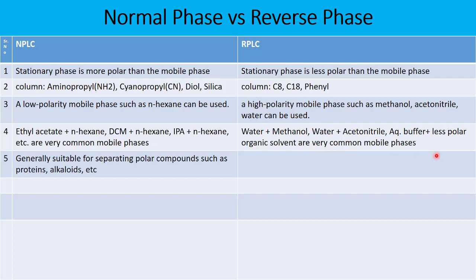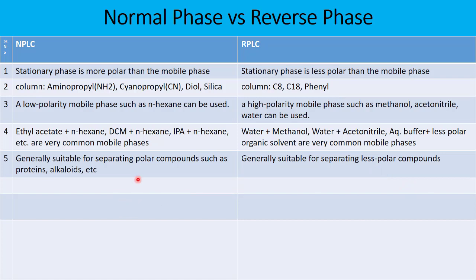Normal phase liquid chromatography is generally used for the separation of polar compounds, because the polar stationary phase retains polar compounds for a longer time. Proteins, alkaloids, and amino acids are examples of polar compounds. In contrast, reverse phase liquid chromatography is generally suitable for separating less polar or non-polar compounds, because the stationary phase is non-polar or less polar — think of the 'like attracts like' rule.